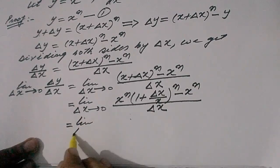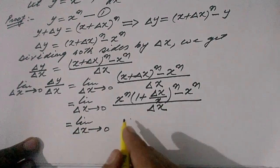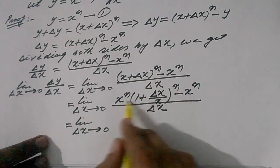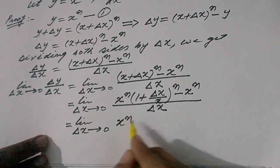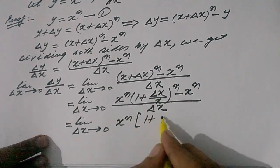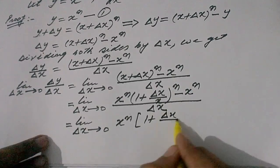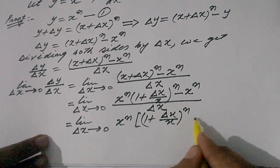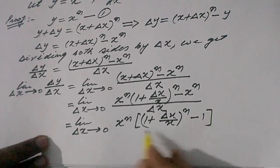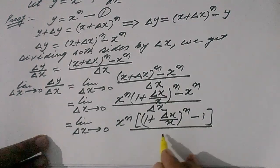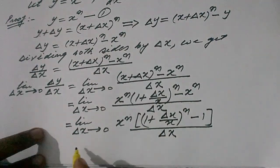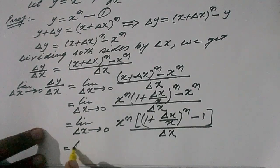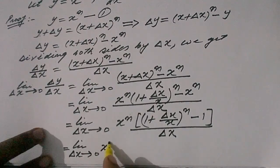That is equal to limit delta x tends to 0. Out of these two terms, x raised to the power n can be taken common. So x raised to the power n is common, and inside the bracket we have 1 plus delta x upon x, whole to the power n, minus 1, divided by delta x.